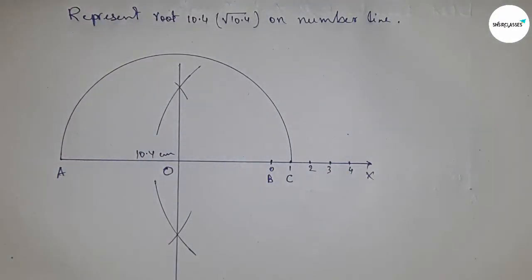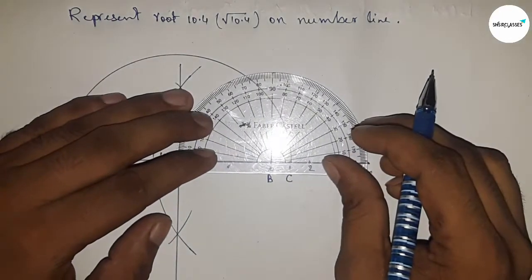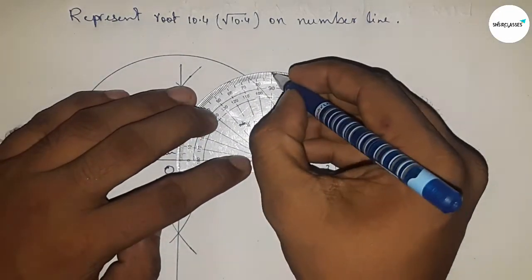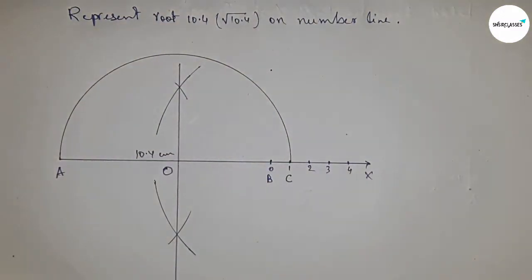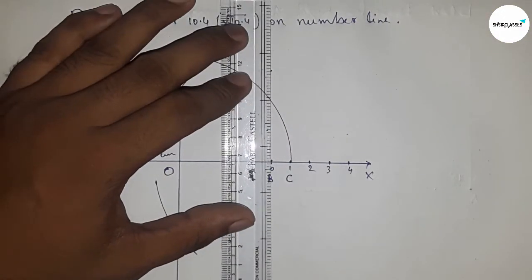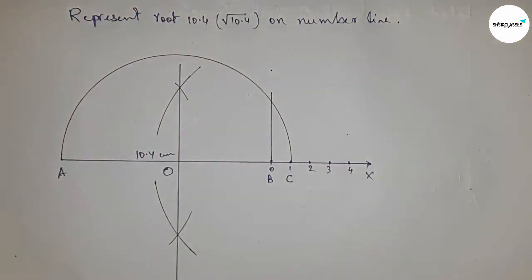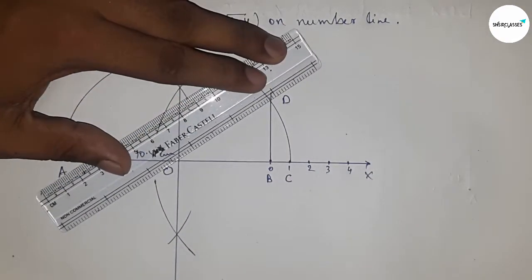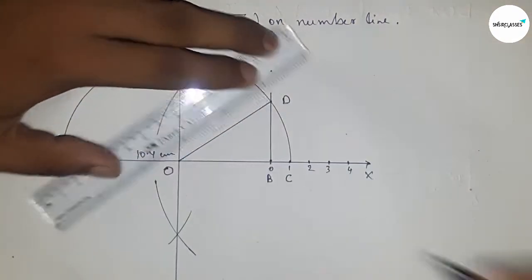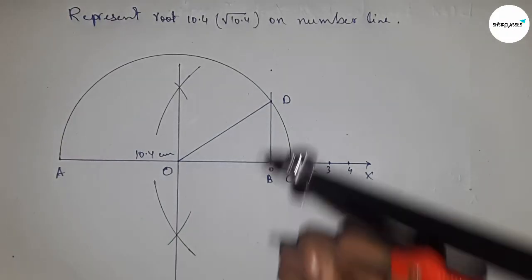Now drawing a 90 degree angle on the point B by using a protractor. Now joining this which meets at point D. Now joining O and D.